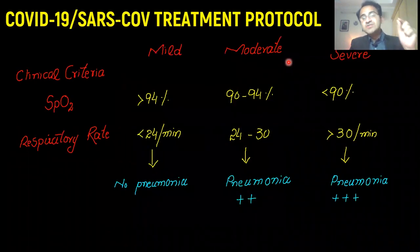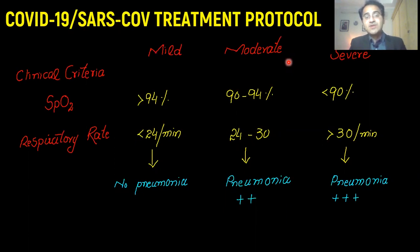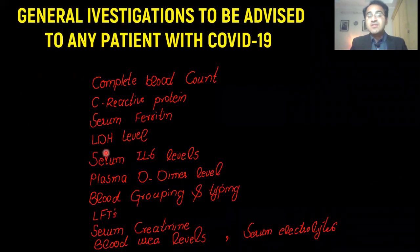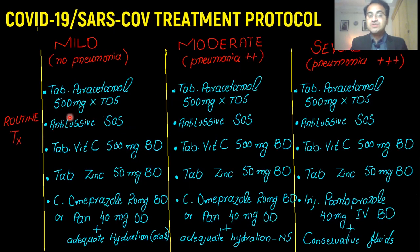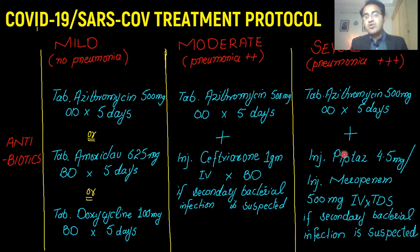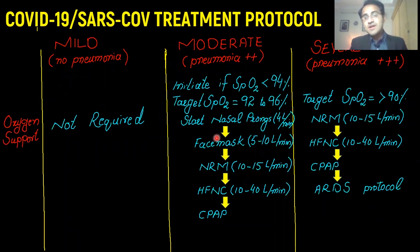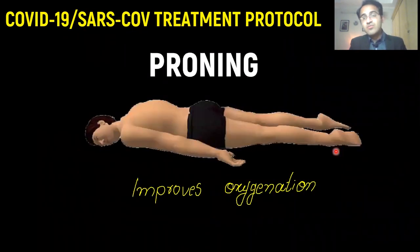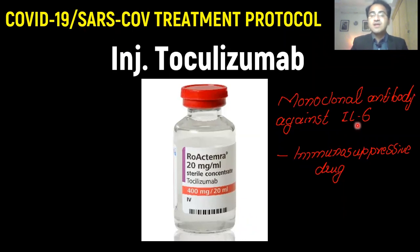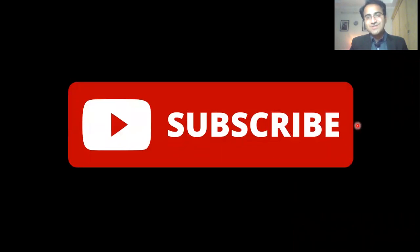In summary: first, classify a diagnosed COVID-19 patient into mild, moderate, or severe category based on saturation level and respiratory rate. Then perform all the required investigations. According to the classification, give routine treatment involving antipyretics, antitussives, vitamin C, zinc to boost the immune system, and omeprazole to protect the stomach. Escalate antibiotics according to severity. Every patient will get anticoagulation. Steroids are very important for immunosuppression. Oxygen support is not required in mild cases but is essential in moderate to severe cases with escalation. Proning improves oxygenation. Tocilizumab is a monoclonal antibody against IL-6.